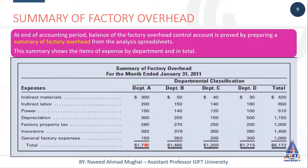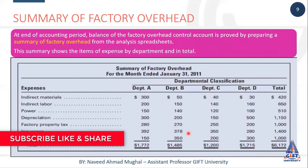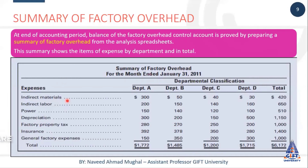So this is basically the summary of factory overhead, aur ye humein batata hai ki is department mein actual factory overhead is mahine mein itne hue hain, is department mein itne hue hain, aur total hamare paas F.O.H. itne hue hain. Toh ye basically end result hota hai hamara factory overhead ke actual F.O.H. ki recording ka. Hum ye banane ke liye jo hai wo tamam documents prepare karte hain taake hamare paas ye har department ke actual F.O.H. aa jayein. In this way we can calculate actual factory overheads in our organization.